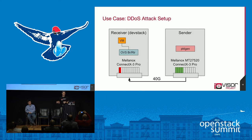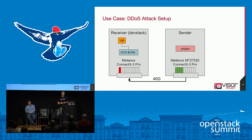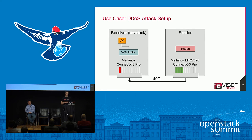We were actually working on this before the attack — this is just coincidental. To defend against a DDoS, we're trying to see how fast we can drop packets — that's really what DDoS mitigation is. We have a simple setup: two x86 boxes. The machine on the right is our sender; it'll send on a 40-gig NIC, UDP, small frame size, as fast as it can. On the left we have an OpenStack dev stack, OVS, bridge router, a couple VMs with floating IPs. We're going to send traffic to that and see what happens.